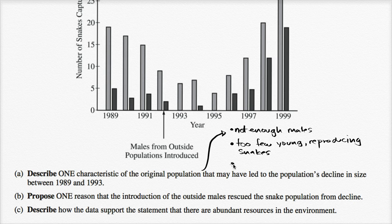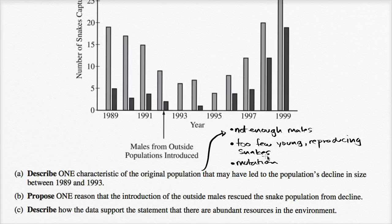Another possibility: because it's a small population, you could have a mutation that is disproportionately showing up in that population which makes it less likely to reproduce. So a mutation in the population that makes it less likely to reproduce. For the actual test, you just have to describe one characteristic, and these are all possible characteristics.